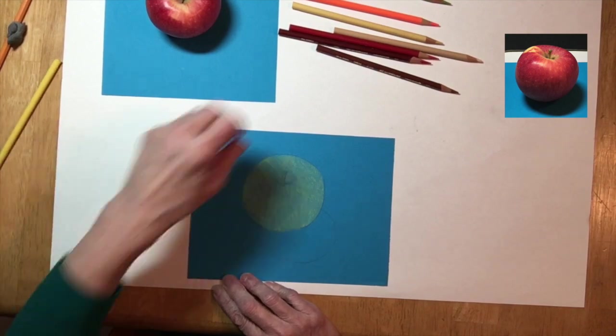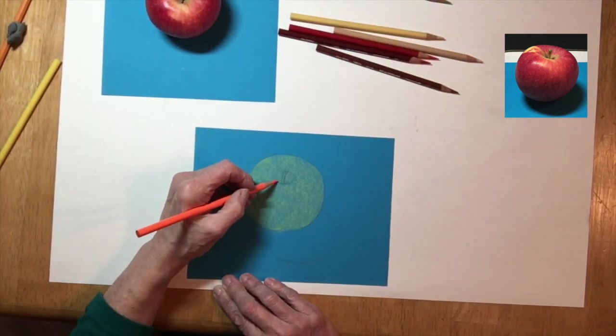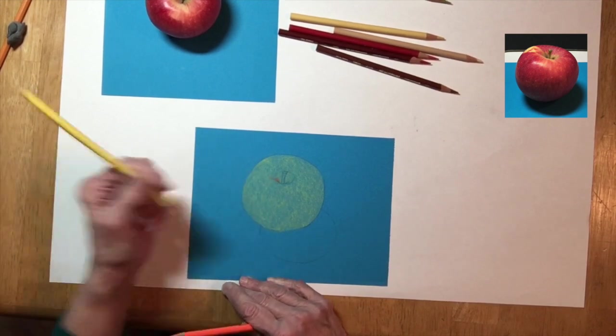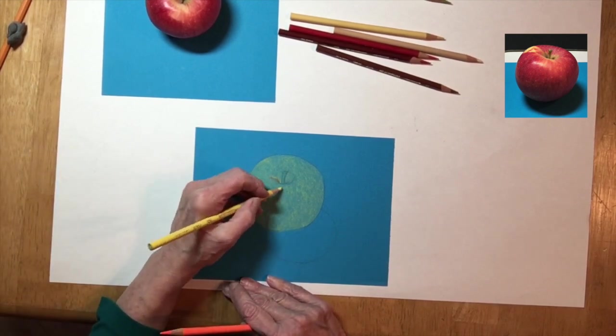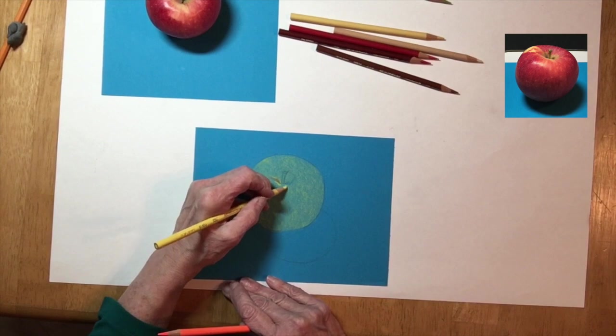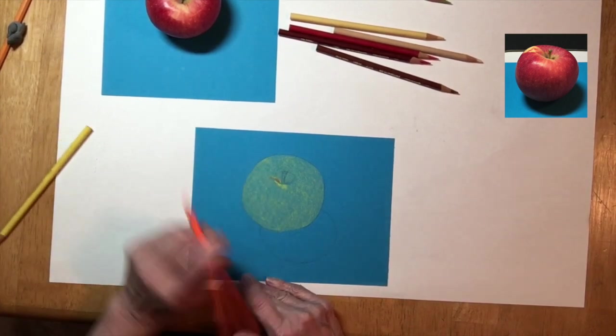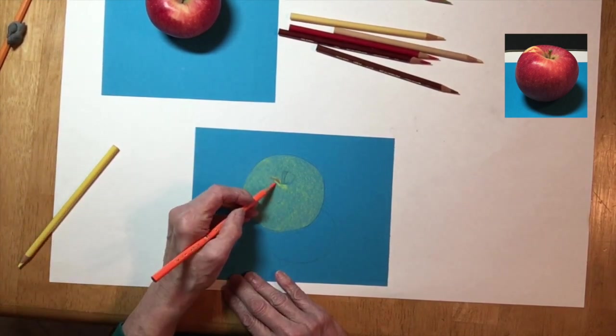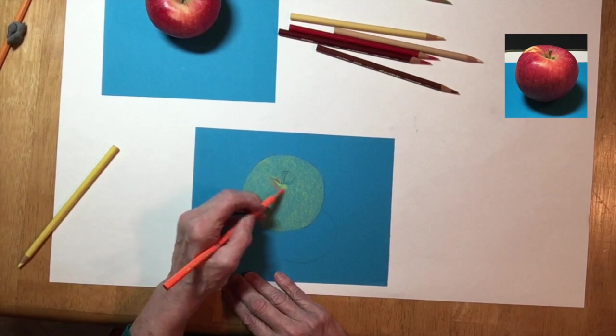By keeping everything sheer and with a light touch, I'm able to add other colors on top of that yellow and build up the values and colors to make them as realistic and have as much volume and 3D qualities as possible.